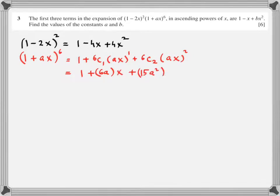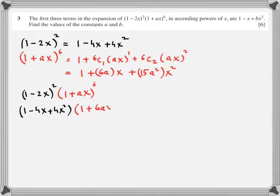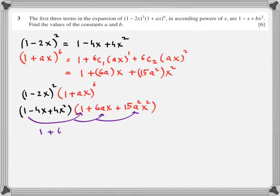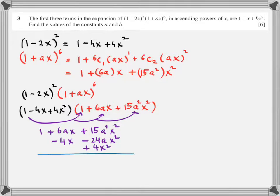In the second part it becomes a squared x squared. Now selective multiplication: three terms of the first bracket times three terms of the second bracket. By the counting principle that's nine possibilities, but I'm only looking up to x squared. So: one multiplied with all three terms gives 1 plus 6ax plus 15a squared x squared. Then minus 4x multiplied with only the first and second terms.